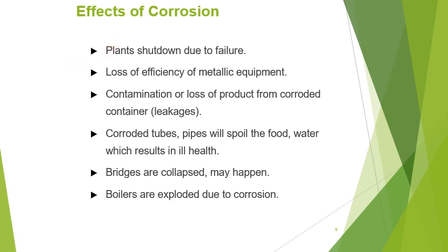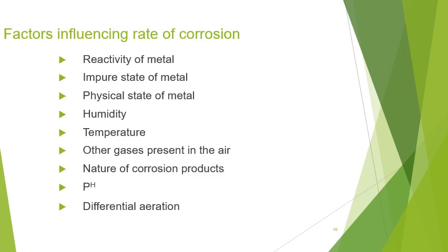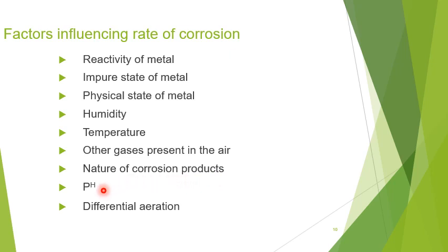Next, we discuss the factors influencing the rate of corrosion. Which factors influence the rate of corrosion? These are: reactivity of metal, impure state of metal, physical state of metal, humidity, temperature, other gases present in the air, nature of corrosion products, pH of material, and differential aeration.